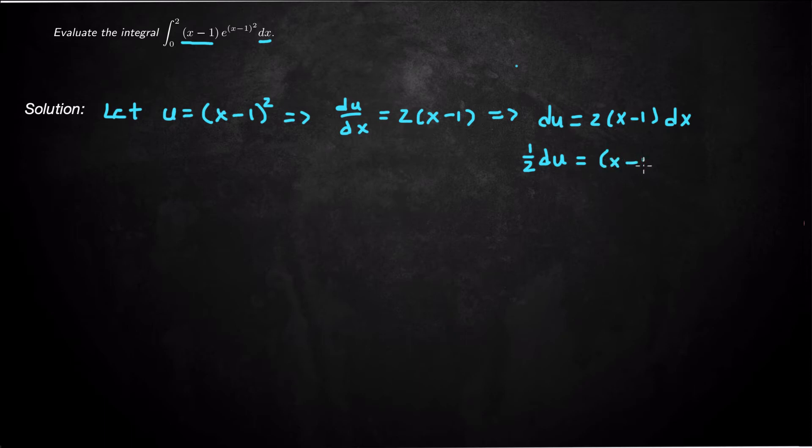Part of my integrand is absorbed into du/2, and then my function becomes e^u times du/2. Now all I've got left to do is change my bounds.